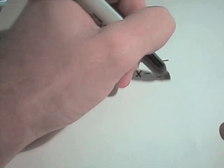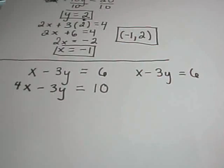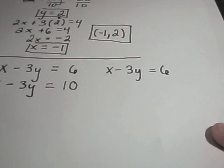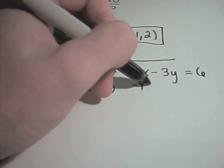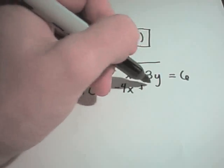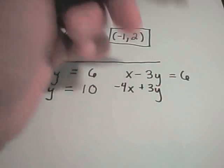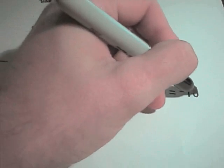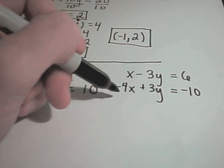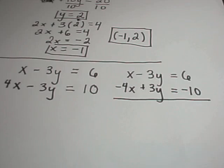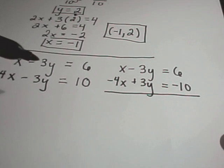So I'm going to leave my x minus 3y equals 6 part alone. And then I'm simply going to multiply the second line by a negative. That will give me negative 4x, positive 3y, and negative 10. I could have easily multiplied the first row by a negative. So all you have to do is just change one of them. So it doesn't matter which one you do.